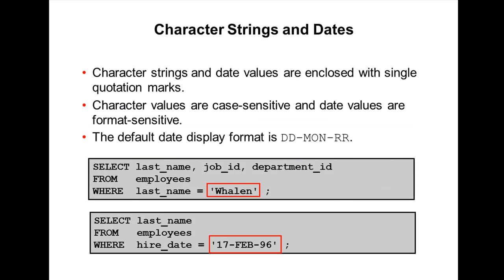Now, how do we compare character strings and dates in the WHERE clause? Character strings and date values should always be enclosed in single quotation marks. Character values are case sensitive, and date values are format sensitive. The default date display format is DD-MON-RR.